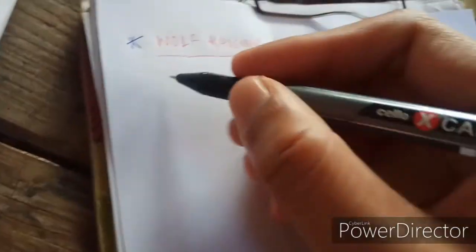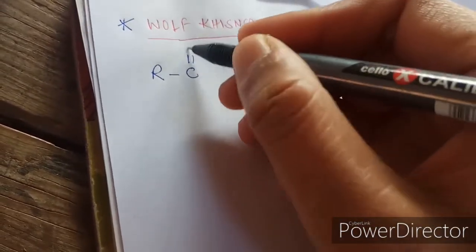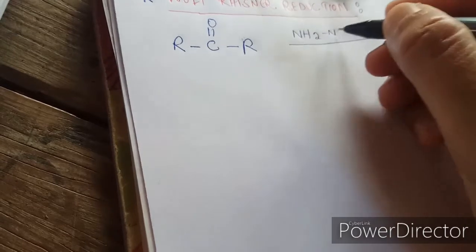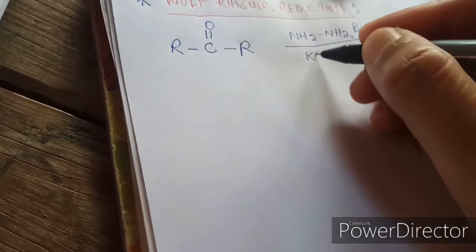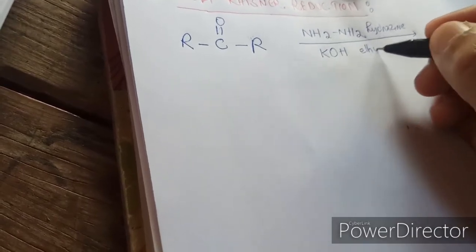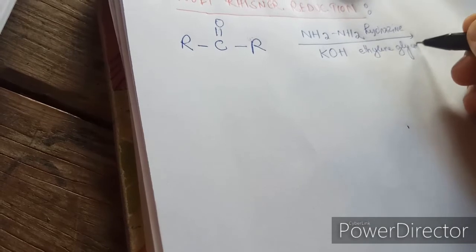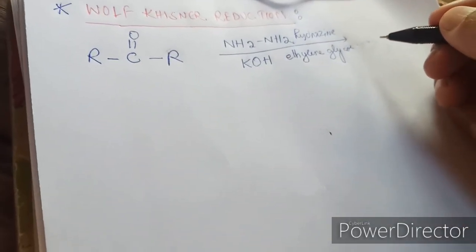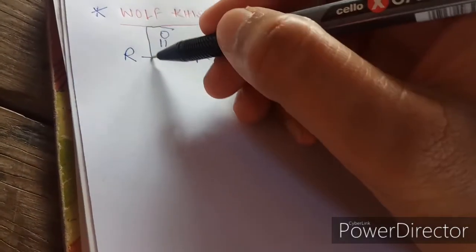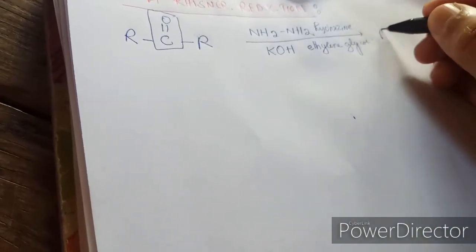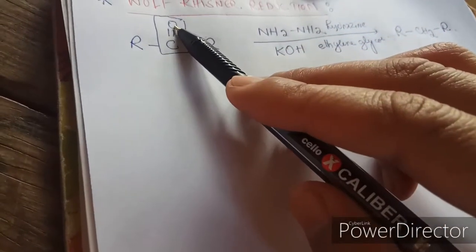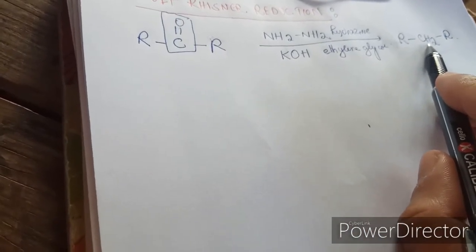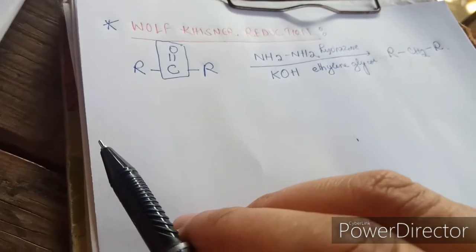First let's see the reaction. For this I will take a ketone. This is hydrazine, in presence of a strong base, and the solvent is ethylene glycol. It will get converted into a corresponding hydrocarbon, that is an alkane. This part will be replaced by CH₂. This involves removal of oxygen and addition of hydrogen, so it is a reduction. After this we will see the mechanism of the reaction.